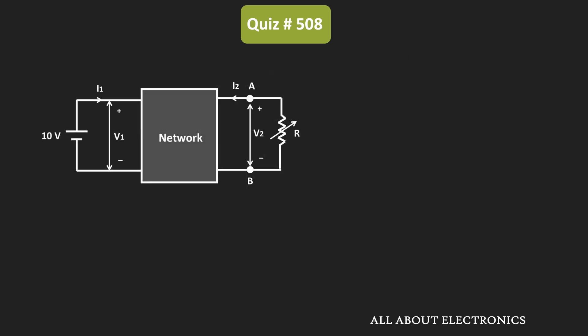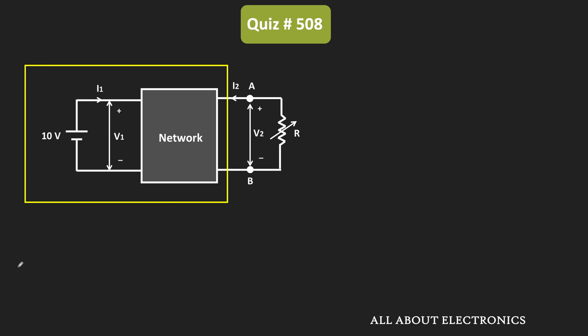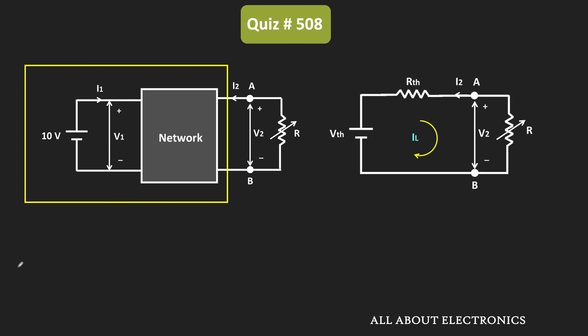This is the two-port network given in the question. On the port 1 side, a 10V voltage source is connected, and on the port 2 side, the variable resistor R is connected. We do not know the structure of this network, but since it is a linear network, we can replace this part of the circuit with the Thevenin equivalent voltage in series with the Thevenin equivalent resistance — that is, the Thevenin equivalent circuit. On the right-hand side of terminal AB, we have the variable resistor. The load current IL is the current flowing through R, and IL is equal to minus I2.